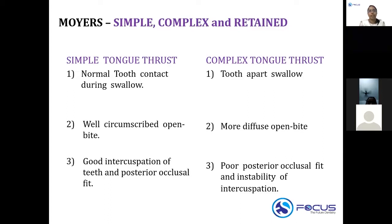In simple tongue thrusting you see a well-circumscribed open bite, while a diffuse open bite is seen in complex tongue thrusting. This is an important MCQ point. In simple tongue thrusting you see good intercuspation of the teeth with posterior occlusal fit, and in complex tongue thrusting you see poor occlusal fit and instability of the intercuspation.